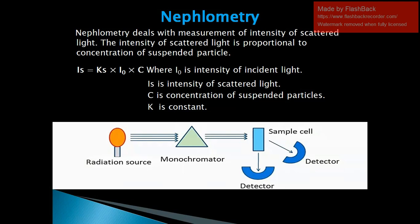The radiation source emits radiation which passes through the monochromator, converting polychromatic light into monochromatic light. The monochromatic light passes through the sample cell, where some radiation is absorbed and some is scattered, which is measured by the detector. The key difference between turbidimetry and nephelometry is that in turbidimetry the detector is placed at 180 degrees, while in nephelometry the detector is placed at 90 degrees or 45 degrees to the radiation source.